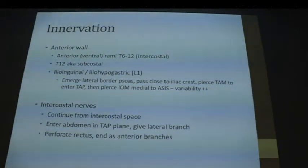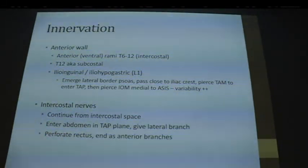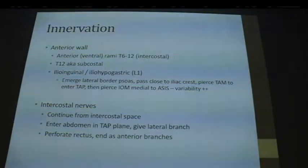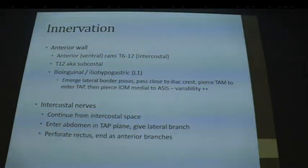The important part is the innervation. The anterior abdominal wall is basically supplied from the anterior or ventral rami of the T6 to T12 spinal nerve roots, which are the intercostal nerves. The T12 nerve is also called the subcostal nerve. You also have the ilioinguinal and the iliohypogastric, which come from L1. They traverse the muscular layers and part of their course runs very close to the anterior superior iliac spine. The intercostal nerves come from the intercostal space, enter the abdomen in the TAP plane, give a lateral branch, and then the nerve carries on anteriorly, perforates the rectus, and ends in anterior branches.